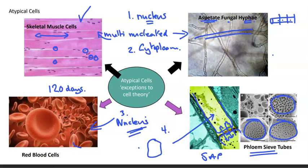Rather than having to reject cell theory, we know that the origin of all these cells is other cells, we know that they have DNA at least initially, and we know that they are capable of supporting their own functioning. So what we have to do is extend our understanding of the detail of what cells are and how variable they can be — but the theory that all living things are composed of cells is still retained.